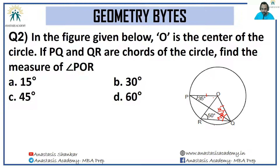So in triangle OPQ, the apex angle is 180 minus 35 minus 35 = 110°, and the base angle at Q is 15°. In triangle OQR, the base angle at Q is also 15°, and the apex angle at O is 80°. Angle POQ is 110°, minus angle QOR of 80°, gives angle POR = 30°. The answer is option B.